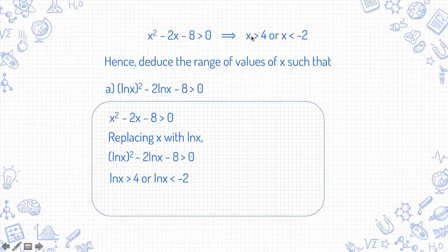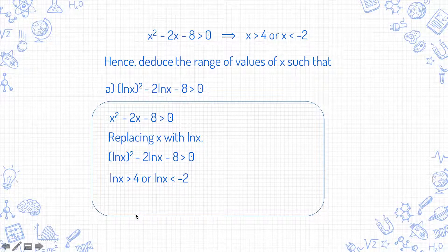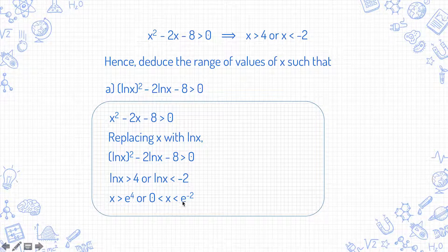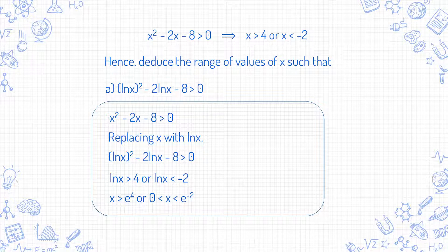So ln x > 4 or ln x < -2. Therefore x > e⁴ or x < e⁻² and x > 0. Take note of the x>0 condition — you need it because x has to be greater than 0 for ln x to be defined. You can refer to my first video for more explanation of the domain restrictions on solutions to inequalities.